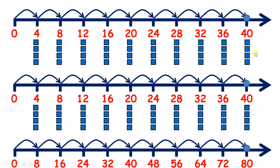If you have something twice, you've multiplied it by 2, so you've doubled it. So 8 is double 4, and if you double the 4 times table, you get the 8 times table.